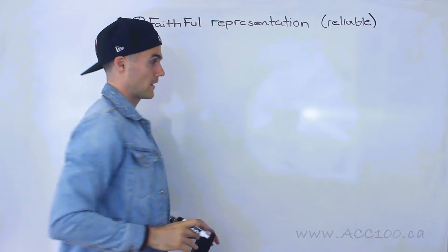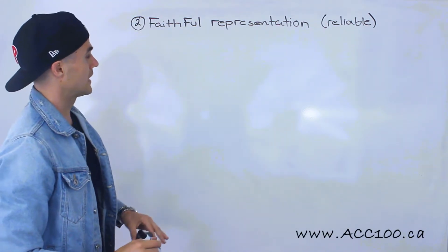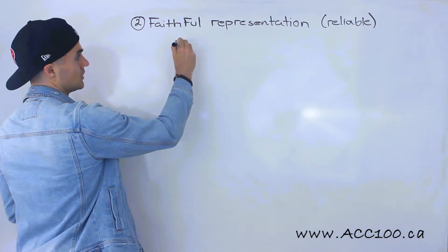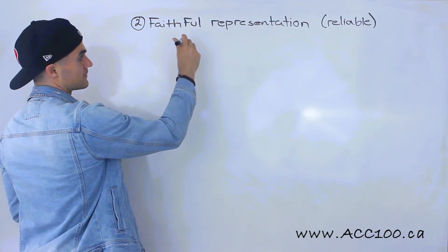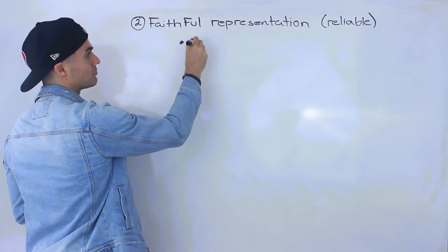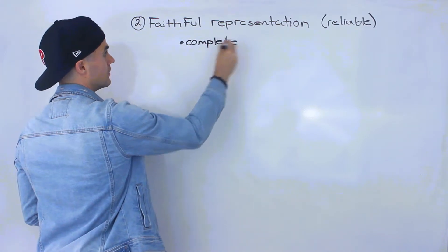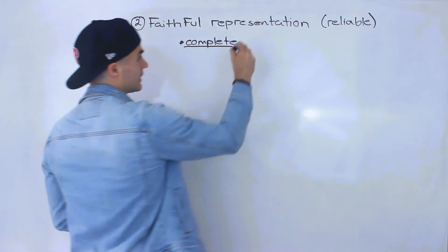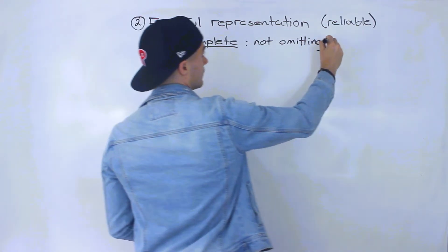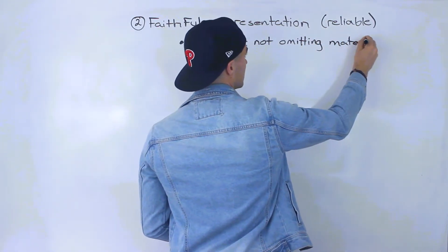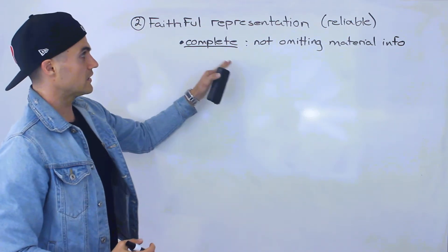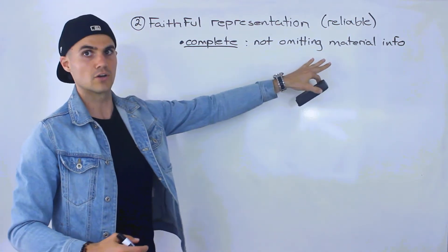You may see this term being thrown around under faithful representation and there's three kind of sub-characteristics of faithful representation that you'll run into. So the first characteristic that makes information have that quality of faithful representation is that it's complete. And what this means, if information is complete, it means it is not omitting material info. So we briefly touched on this in the last quality of relevance. Now we're getting a little bit more specific. So complete information means it's not omitting material information.